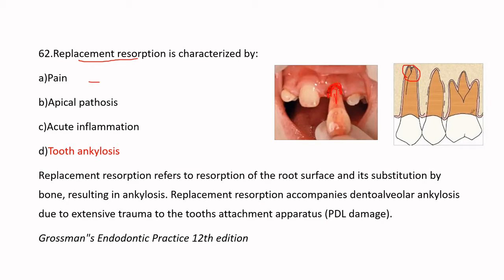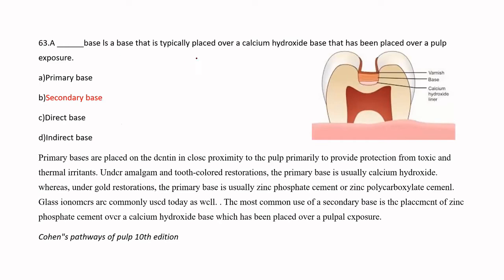A base placed over a calcium hydroxide base is called a secondary base. The primary base is calcium hydroxide, placed in direct contact with or in close proximity to the pulpal exposure to provide protection from toxic and thermal irritants. Any base placed on top of it is the secondary base.